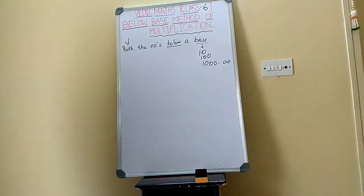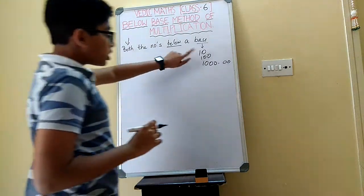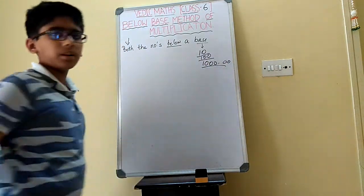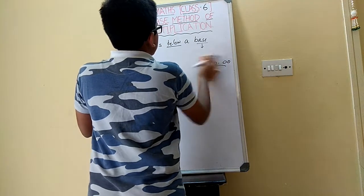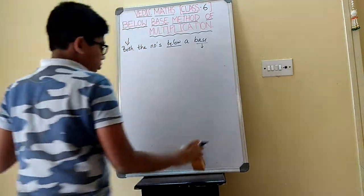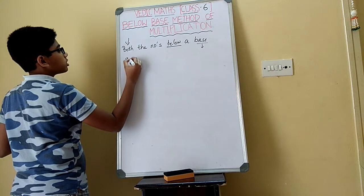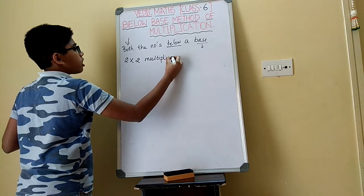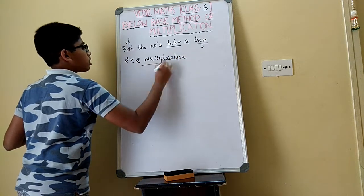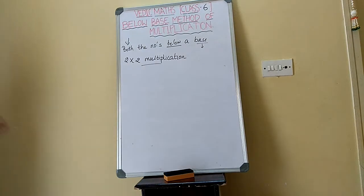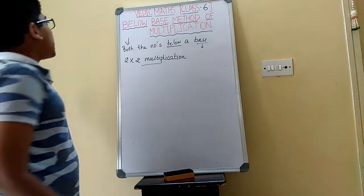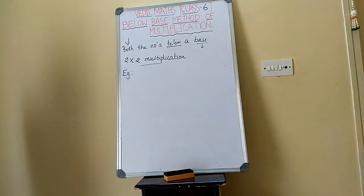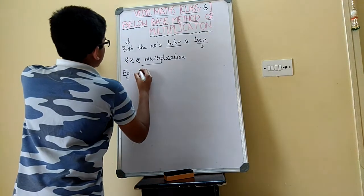The base is a number starting from 1 followed by any number of zeros. The two numbers should be below this base — any number less than the base. We will start with a 2-digit by 2-digit multiplication. My example is going to be 98 into 72.